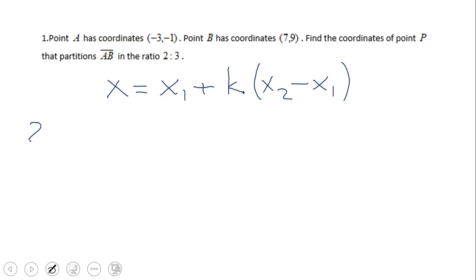If the ratio is 2 to 3, that means we need to find that point that partitions the original segment into two smaller segments: the first one will be two sections and the other one three sections. The K will be 2 fifths, so that is the key we're going to use here.